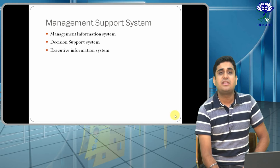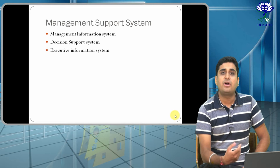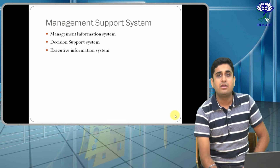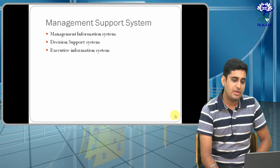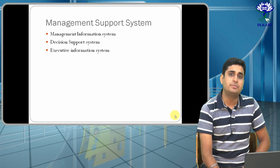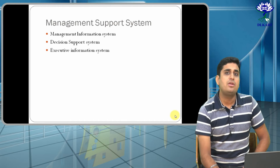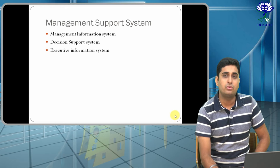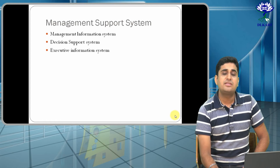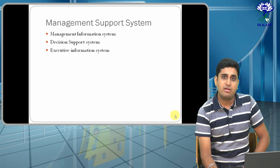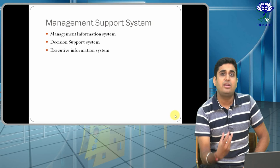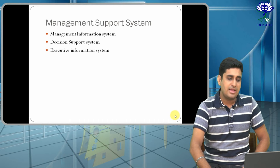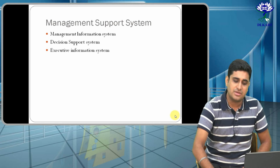Decision Support System guides humans on what decision has to be taken next for the company, because it gives a kind of output that helps you determine what decision to take. Executive Information System is a more granular-level system, where you come to know what decisions have to be taken at the smallest level — that is when the Executive Information System comes into the picture.